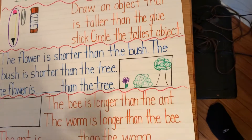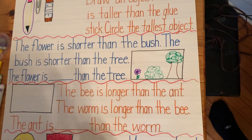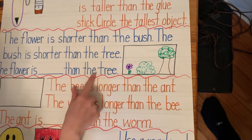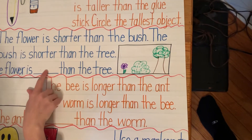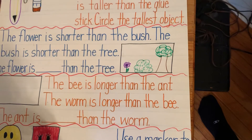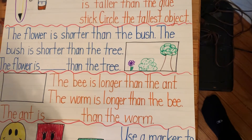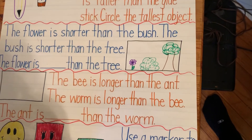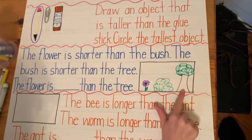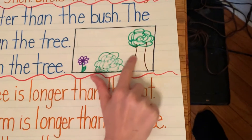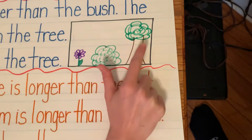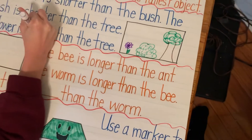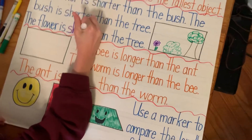We have one more question for this problem. It says the flower is blank than the tree — which word is going to go here, shorter or taller? If I'm looking at my flower and I compare it to my tree, I can see that my flower is shorter than the tree.